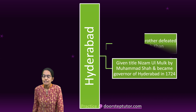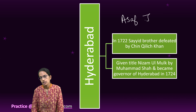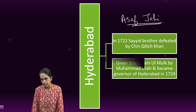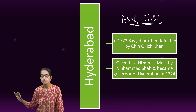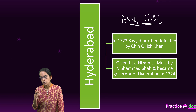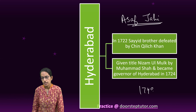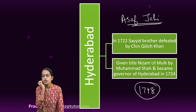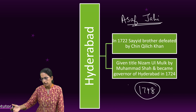He started what was known as the Asaf Shahi dynasty, and his main idea was to keep out the Marathas. But he was highly tolerant of the policies of Hindus. After his death in 1748, this Asaf Shahi dynasty came into power for nearly two decades.